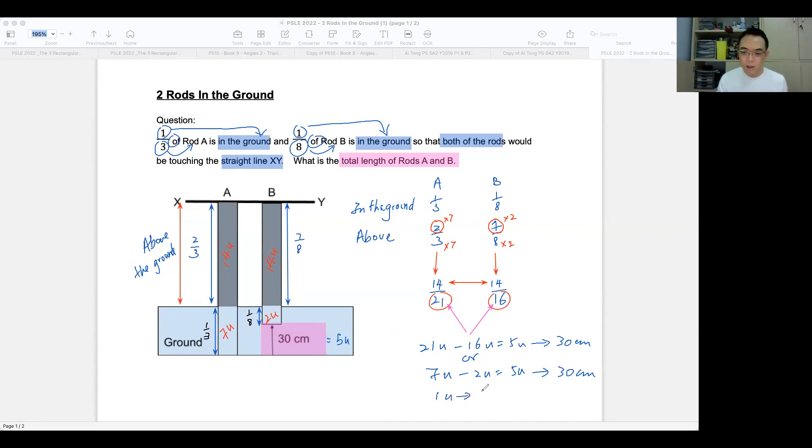Either way you do it, they represent the difference in the length of 30 below the ground. That means I now know that 1 unit is 30 divided by 5 to get 6 centimeters. The 6 centimeters is 1 unit. The question is the total length. The total length is, as I told you just now, the total of these two numbers. 21 for A, 16 for B. I'll just highlight it over here. And when you add it together, you should get 37. Am I correct? So to find the total length, I should now take 16 units plus 21 units to get 37 units. And since 1 unit is 6 centimeters, I should now take 37 times 6. This will give you 222 centimeters. And that is the answer to this question.